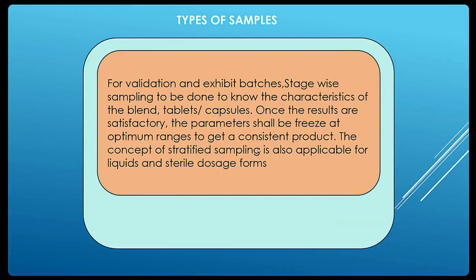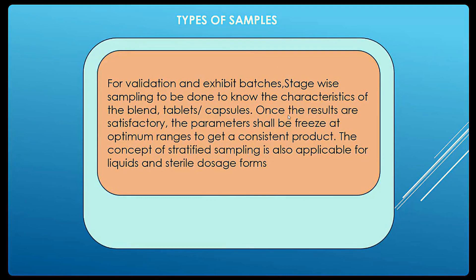For validation or exhibit batches, rigorous sampling is performed. For example, for blend uniformity sampling in validation batches, samples are collected from the granulation stage, fluid bed dryer, blender, and multiple locations of the blend. Multiple samplings are done throughout the batch to check blend uniformity. This type of sampling is protocol-driven. Similarly for liquids and sterile formulations, the same rigorous protocol-driven sampling is applicable.